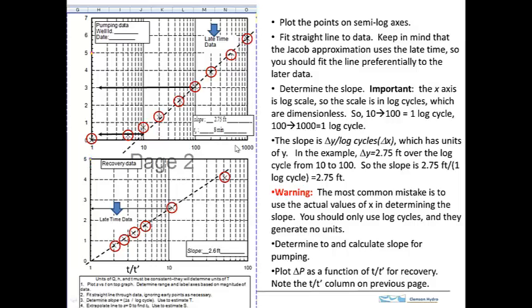And so the slope is always going to be this change in y in whatever these units are divided by log cycles. And log cycles will be dimensionless. So the units of the slope will just be whatever the drawdown units are here. And you have to remember that you're not going to use these numbers. I say over here in this text that this is the biggest mistake that's the most common mistake that's made. You've got to do the x scale in log cycles.